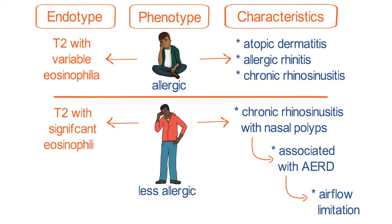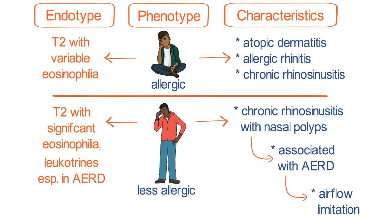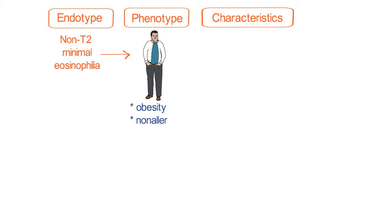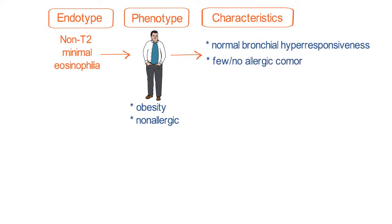Leukotrienes are important, especially in aspirin-exacerbated respiratory disease. On the other side, we have the non-type 2 endotype, which really isn't associated so much with eosinophils. Some clinical characteristics include late-onset, a possible obesity-related association, and generally not allergic. In general, there can be relatively normal bronchial hyper-responsiveness with minimal or no allergic comorbidities.